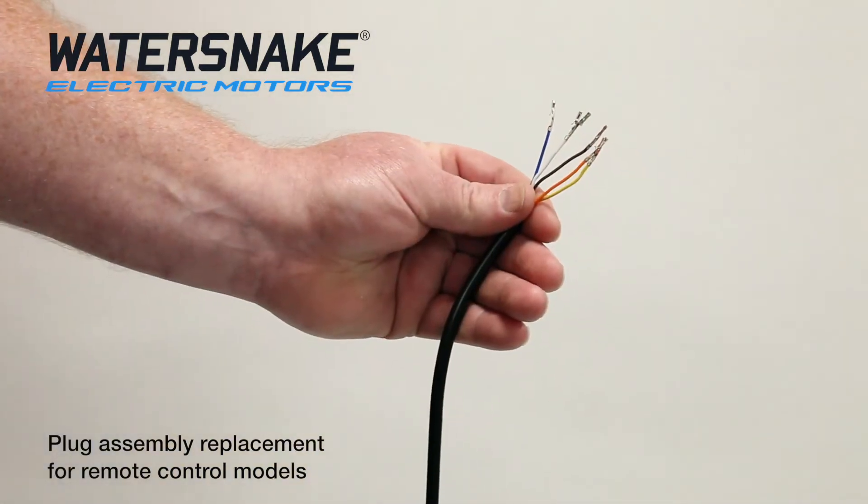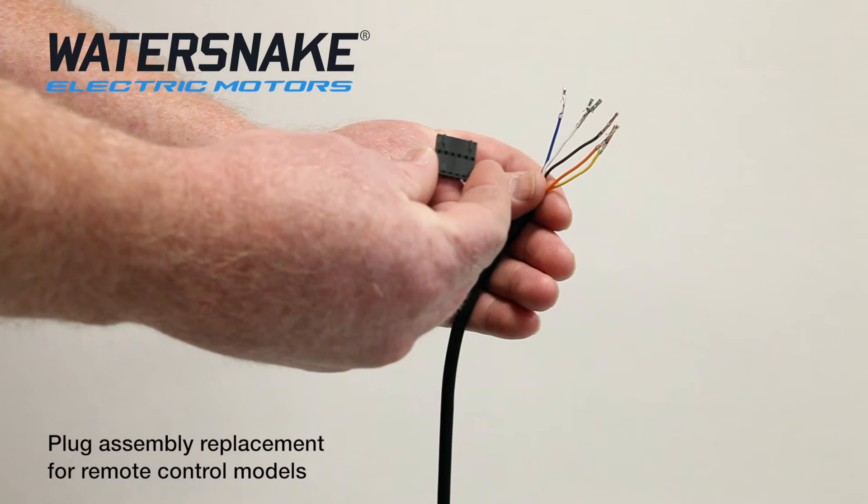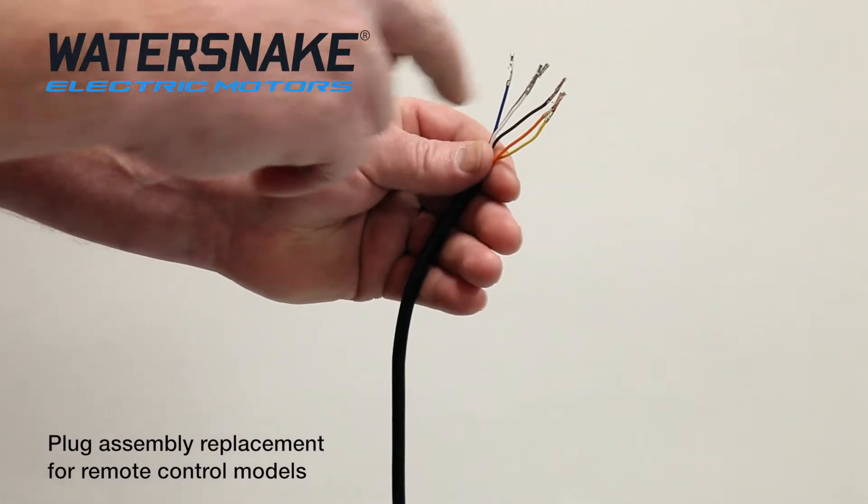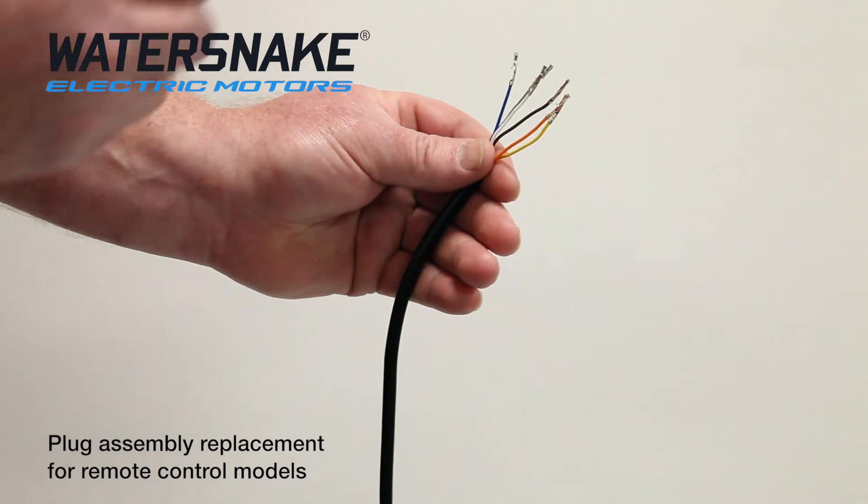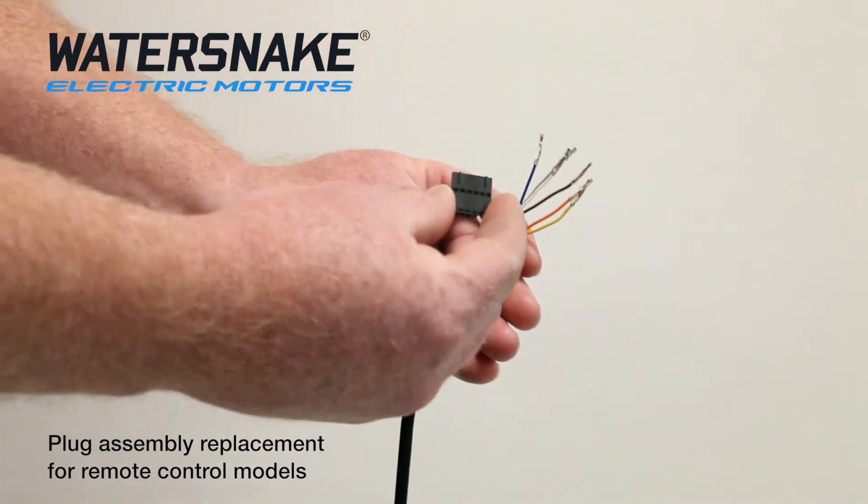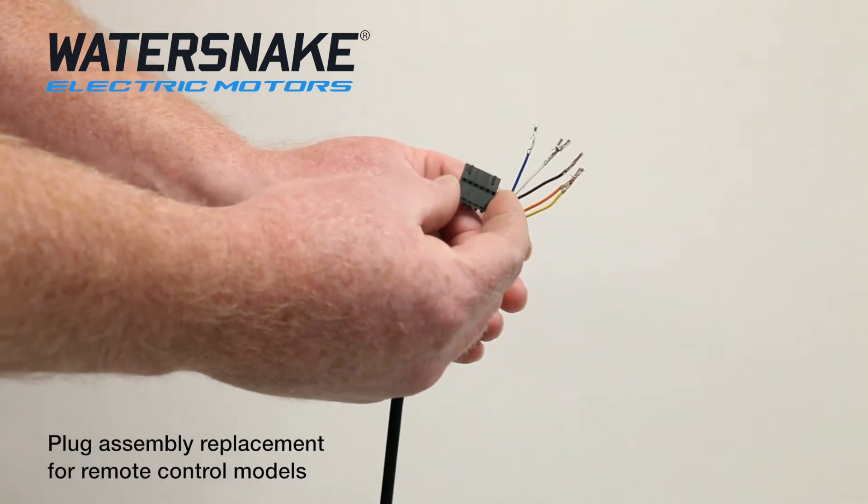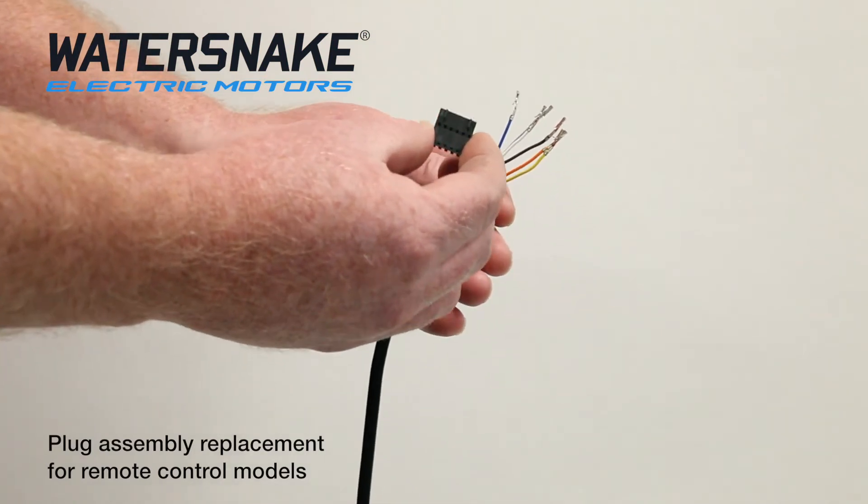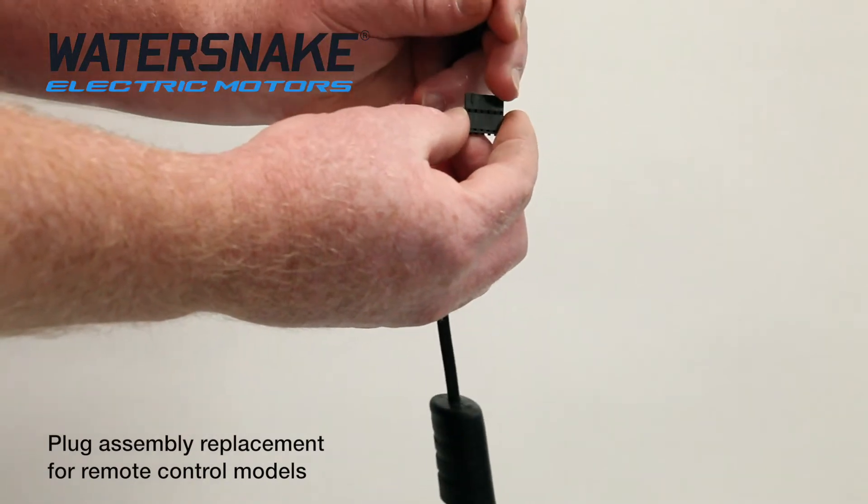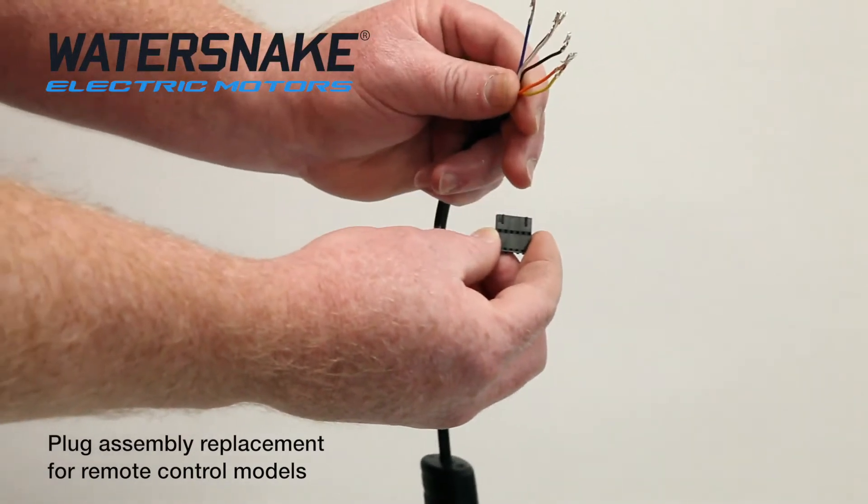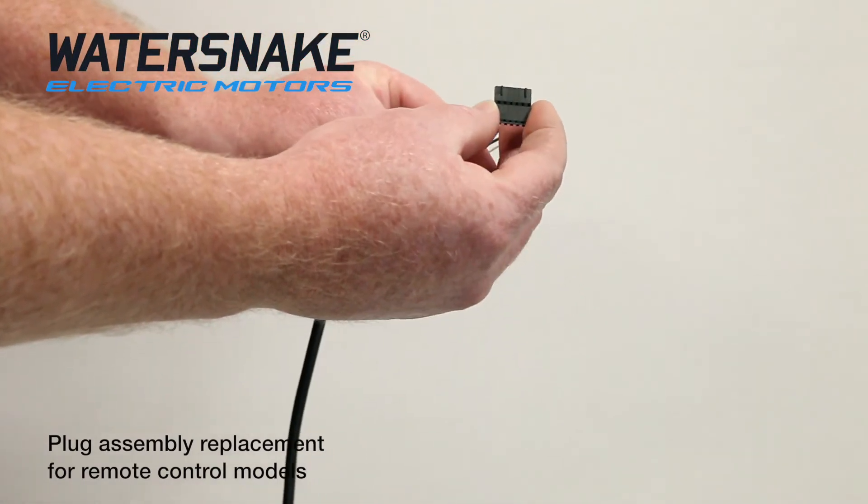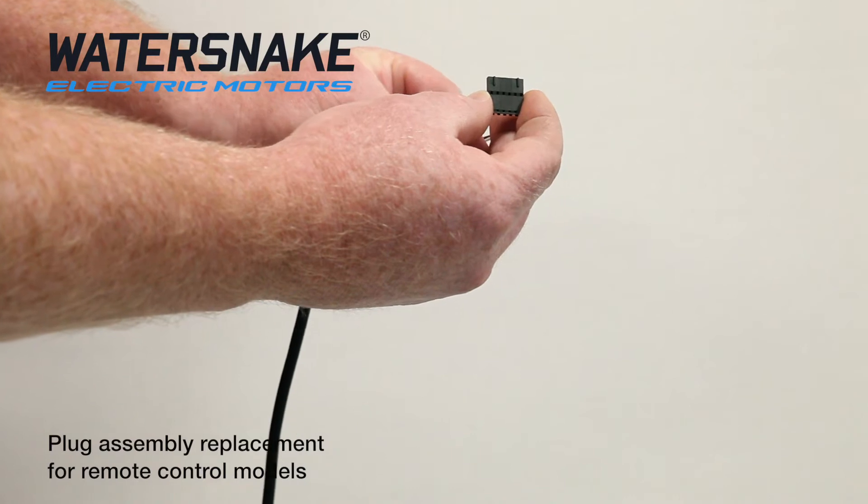With your plug assembly you'll receive this small black plastic clip. The ends of each individual wire from the new plug assembly clip into this little black plastic clip. In terms of the wiring order, it's important that you orient the clip so that there are two black plastic sections visible. The wires actually have little